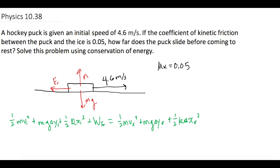Now let's cancel what we don't have. We do have an initial velocity — that stays. mgΔy is zero since the puck stays on the same plane, so that term goes away. No springs, so those terms go away. Work due to friction stays. Final velocity is zero, so that term is zero. No Δy change and no springs on the final side either.